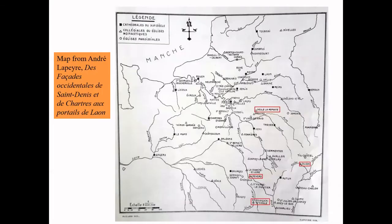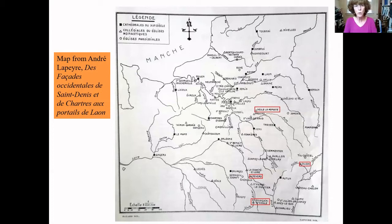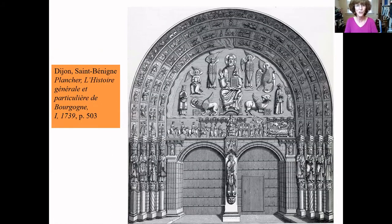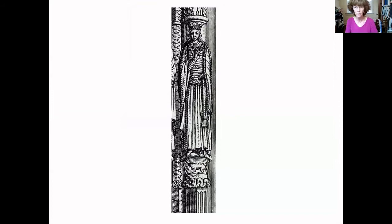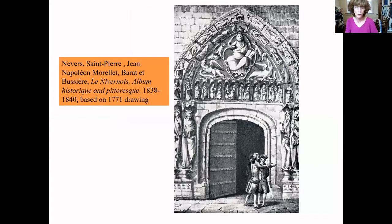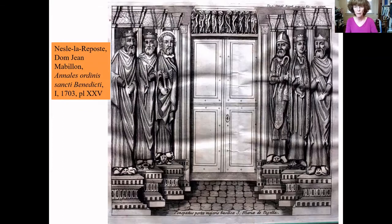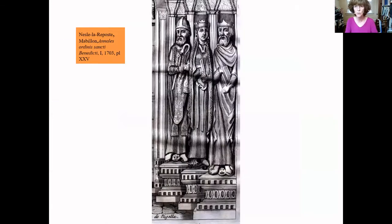The Webfoot Queen in Dijon belongs to a small cluster of portals that appear in Burgundy and Champagne in a monastic context. Two of them are Cluniac — Dijon, our topic, and Saint-Pierre de Mâcon — and two are Benedictine. There is a fourth one that is so dubious we're not going to talk about it today, but there are four in total.